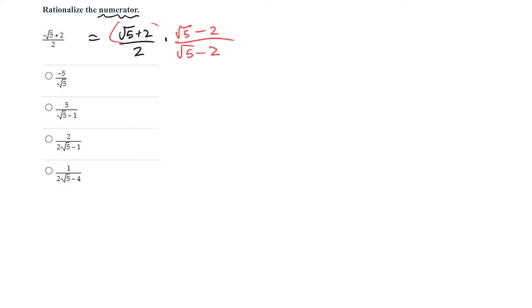So on the top, that'll be a FOIL thing. Root 5 times root 5 is root 25. Root 5 times minus 2 is minus 2 root 5, and then plus 2 root 5, and then minus 4.